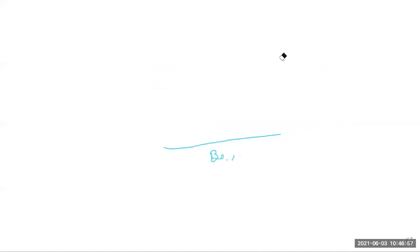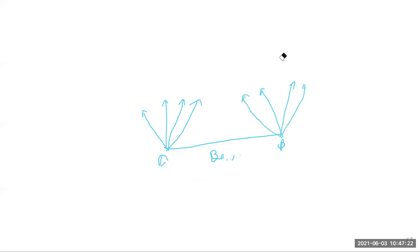Looking at the line diagram of direction and positioning of terrestrial photography: this is the baseline, with point A and point B. Here are the rays from each station. The angular resolution shown is around 10 to 20 degrees.